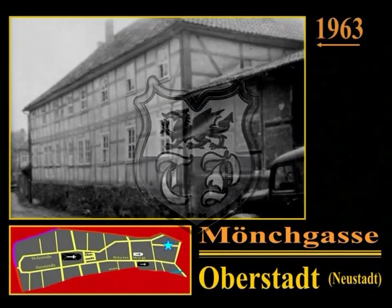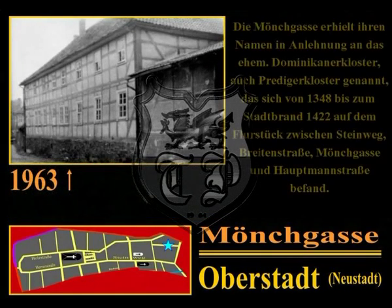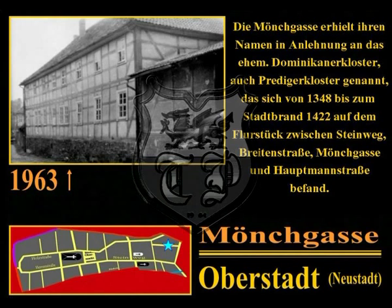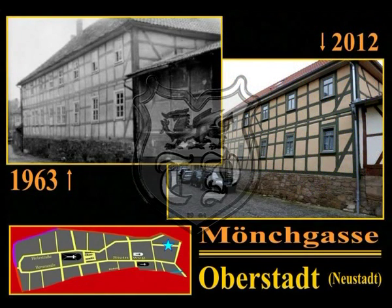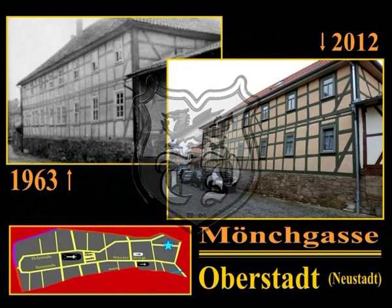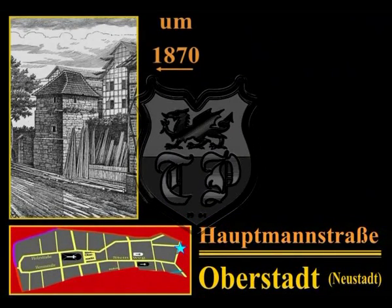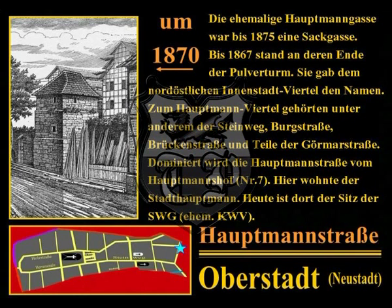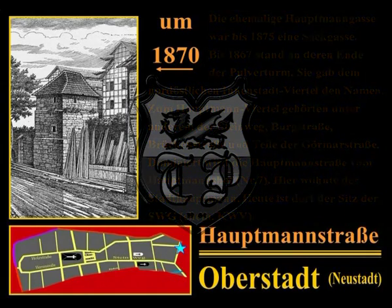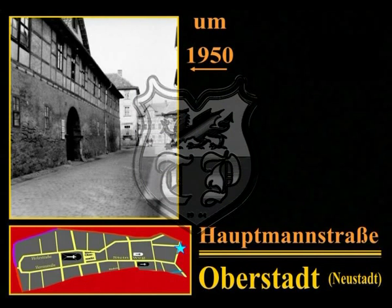Die Mönchgasse verläuft parallel zur Gasse hinter der Mauer zwischen Breitenstraße und Hauptmannstraße. Sie erhielt ihren Namen in Anlehnung an das ehemalige Dominikanerkloster (auch Briedigerkloster genannt), das sich von 1348 bis zum Stadtbrand 1422 auf dem Flurstück zwischen Steinweg, Breitenstraße, Mönchgasse und Hauptmannstraße befand. Die Mönchgasse entstand erst um 1678, nachdem das Kloster aufgelöst wurde. Die ehemalige Hauptmanngasse, die im Jahre 1451 erstmals erwähnt wurde, war bis 1875 eine Sackgasse; bis 1867 stand an deren Ende der sogenannte Pulverturm. Die Hauptmanngasse gab dem nordöstlichen Innenstadtviertel den Namen; zum Hauptmannviertel gehörten unter anderem der Steinweg, die Burgstraße, Brückenstraße und Teile der Görmerstraße.